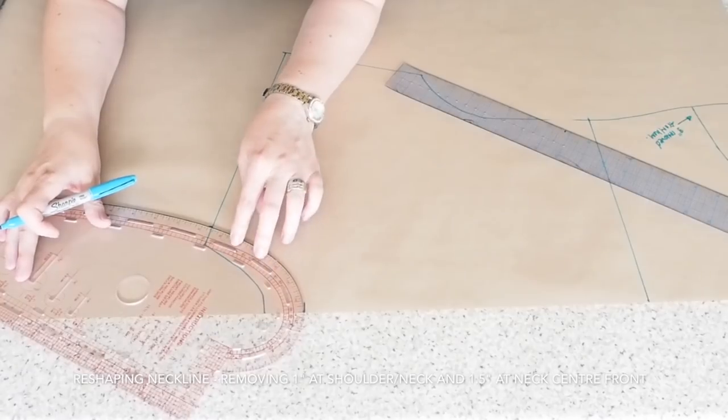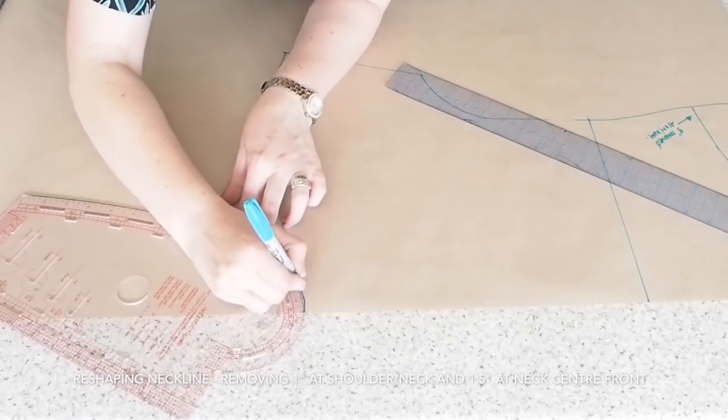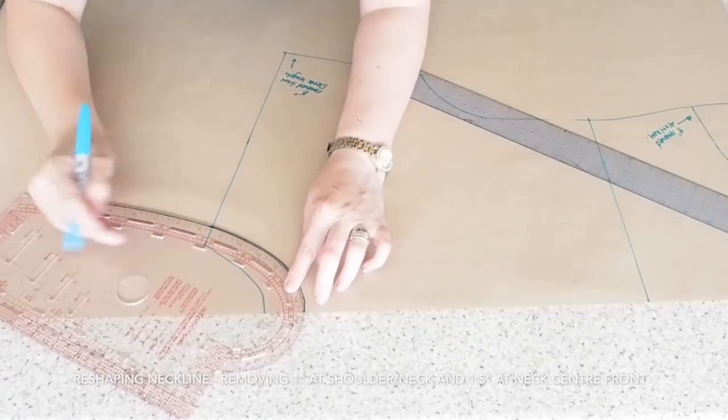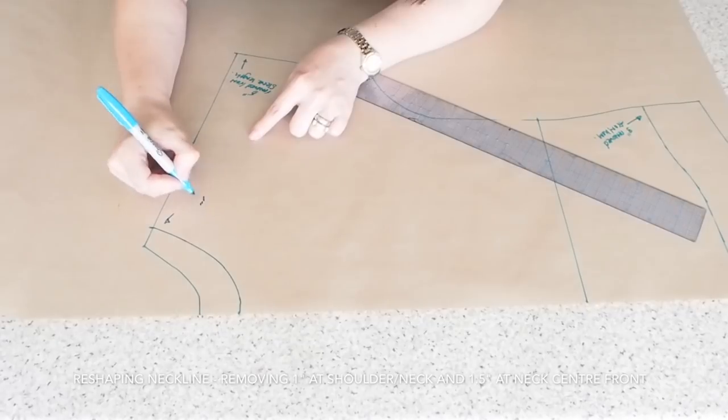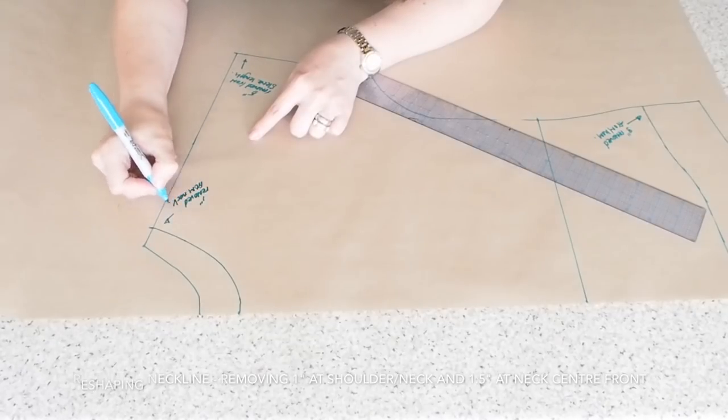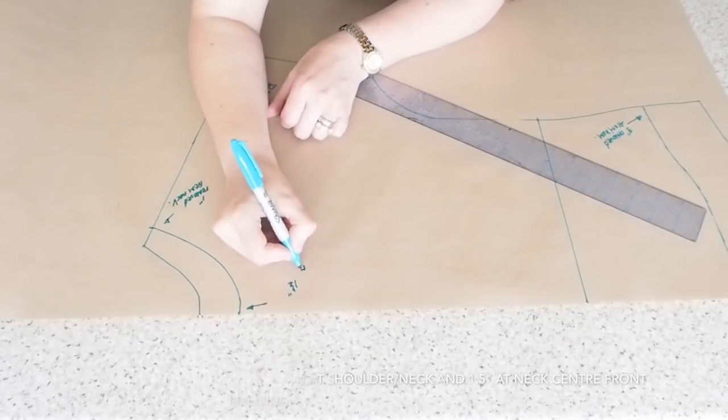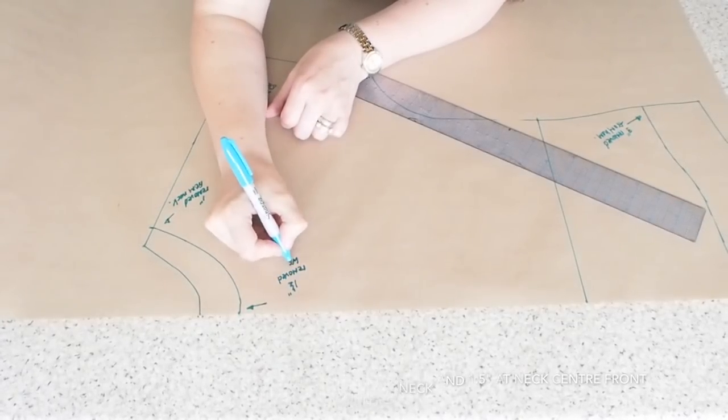And now I'm using my hip curve ruler to draw in a really beautiful curve shape. So that's my new neckline. So just marking in there, one inch removed from the neck shoulder point. And one and a half inches removed from the center front neck point.